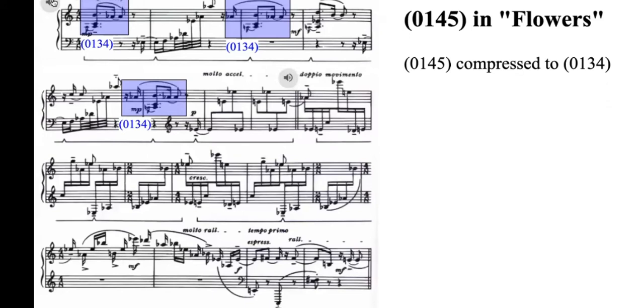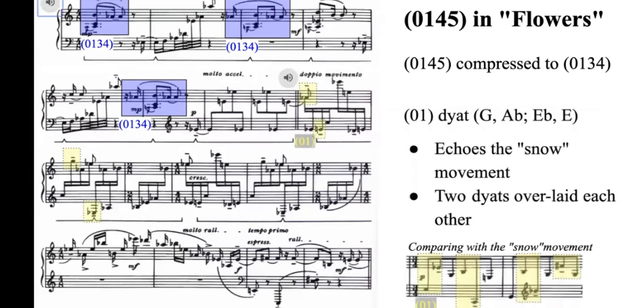At this point, some might suggest at first glance that 0145 is absent in this movement. However, upon close inspection, the 0145 can be found as two pairs of over-layered 01 dyads embedded in the tenuto line, the first pair being G and Ab, and the second pair is Eb and Ab. Such usage of 0145 echoes the Snow movement. The only difference is that those two dyads are over-layered instead of being scattered in the context.